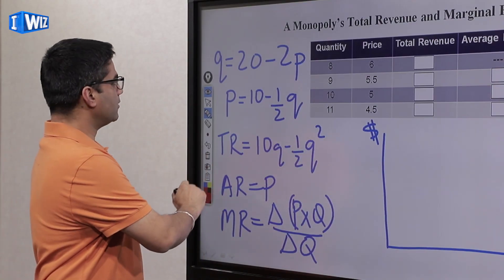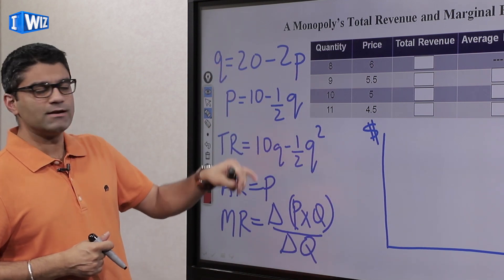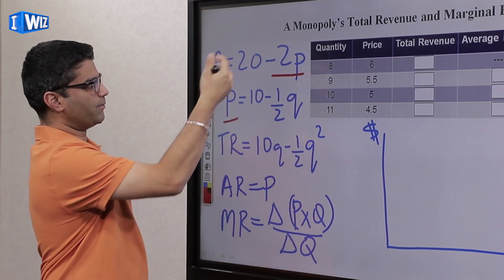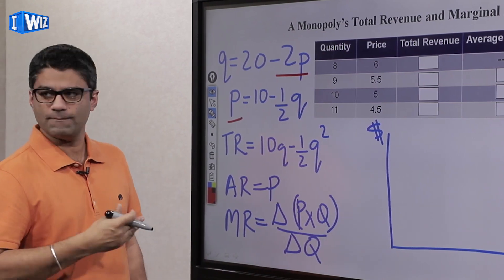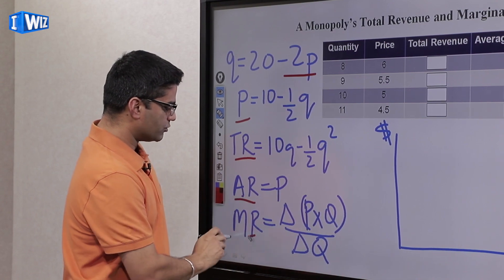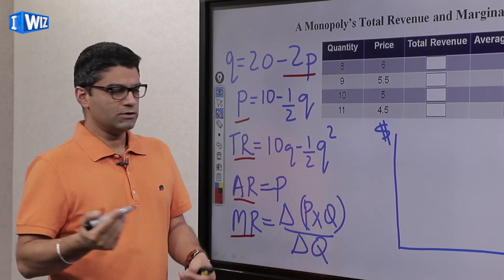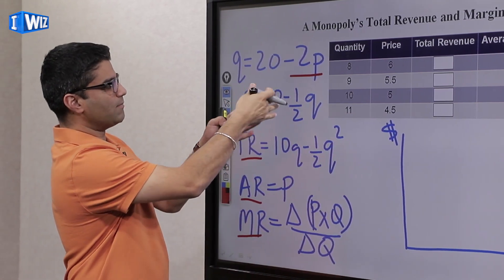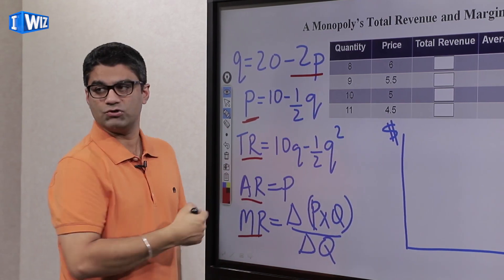We have the equation quantity = 20 − 2P. Solving for the inverse demand function — solving in terms of price — gives us P = 10 − ½Q, which is more convenient to work with. Total revenue is price times quantity, so substituting: TR = (10 − ½Q) × Q = 10Q − ½Q².